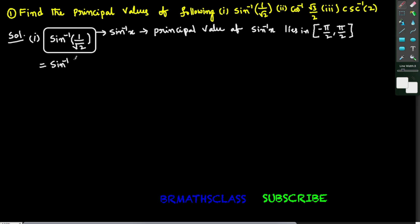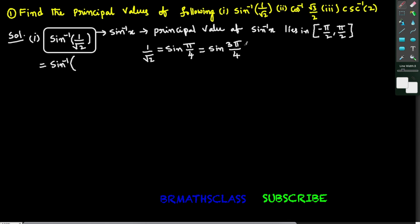Sin inverse of 1 by root 2 — 1 by root 2 we can write like this. The value of sin pi by 4 is 1 by root 2, and the value of sin 3 pi by 4 is also 1 by root 2. So which one do we need to choose? Like this we can write a few more.